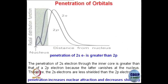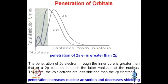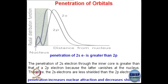Now, if you compare directly 2s versus 2p — you kind of overlap the 2s and 2p electron distributions — this is what the distribution curve you see. As you can see, penetration of the 2s electron is greater than the 2p electron, because you have a very good component of 2s very close towards the nucleus. The penetration of the 2s electron through the inner core is greater than that of 2p electron because the 2p electron vanishes at the nucleus. So, the 2s electrons are less shielded than 2p electrons.